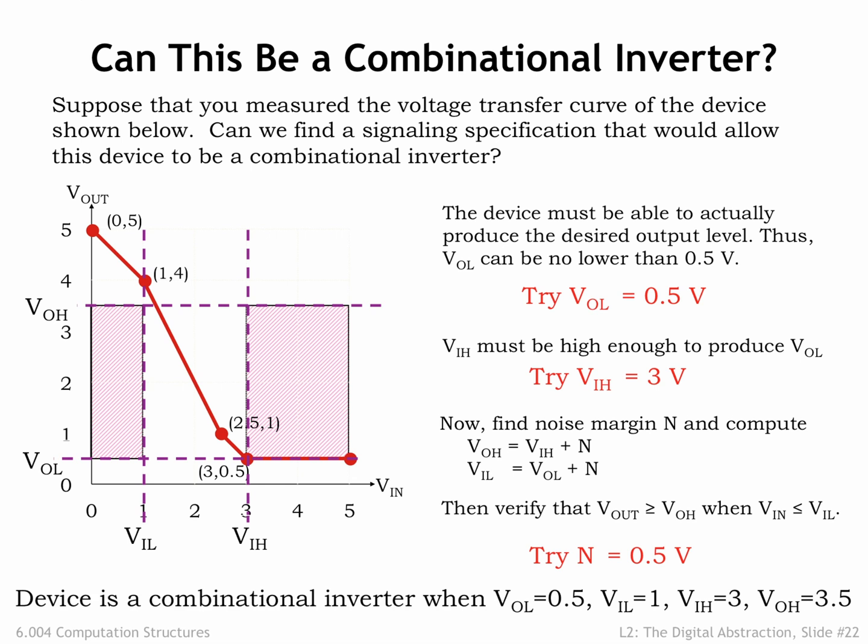So we can use this device as a combinational inverter if we use the signaling specifications with VOL as 0.5V, VIL as 1V, VIH as 3V, and VOH as 3.5V. We're good to go!